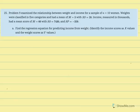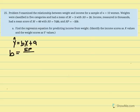In this problem, we're asked to find the regression equation for predicting income from weight. That requires that we solve for slope. Our equation is ŷ = slope times x plus our intercept. Slope is equal to SP, the sum of products of deviations, over the sum of squared mean deviations for our x distribution.